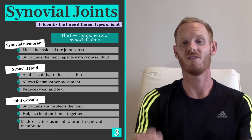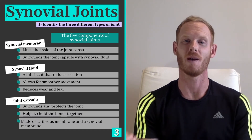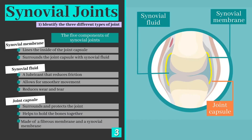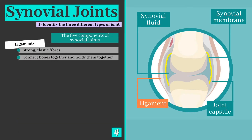The joint capsule is made of a fibrous membrane and sits just outside of the synovial membrane. Its role is to protect the inside of the joint and provide some additional structure to keep those bones in place. Ligaments are strong elastic fibers and their main role is to connect bones together and to hold them in place at joints.